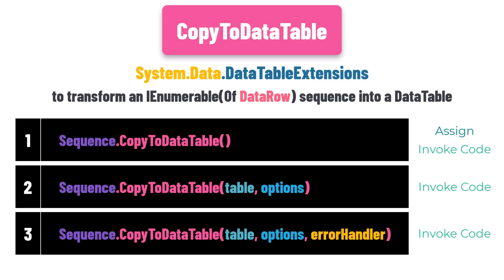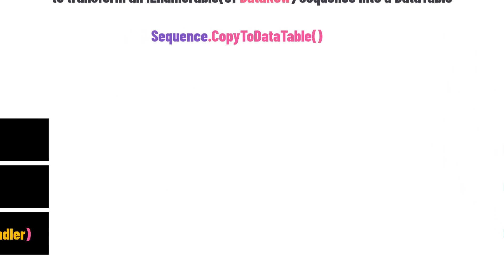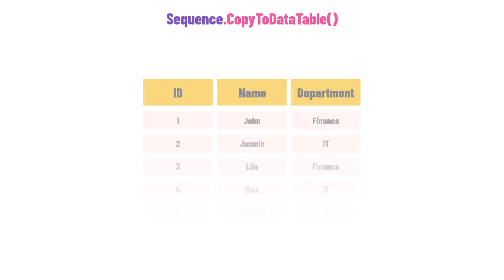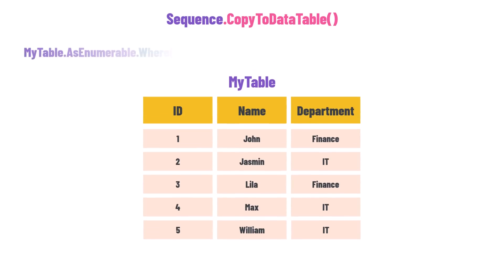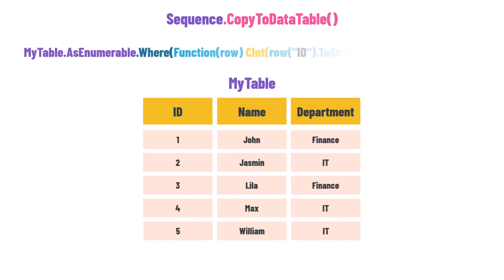Now let's start with the first overload. I have the following DataTable called MyTable, which contains three columns and five rows. Suppose I want to filter this table to get only the rows where the ID is greater than three. For that, I can use the following query. First, I define the data source, which is the table I want to filter.